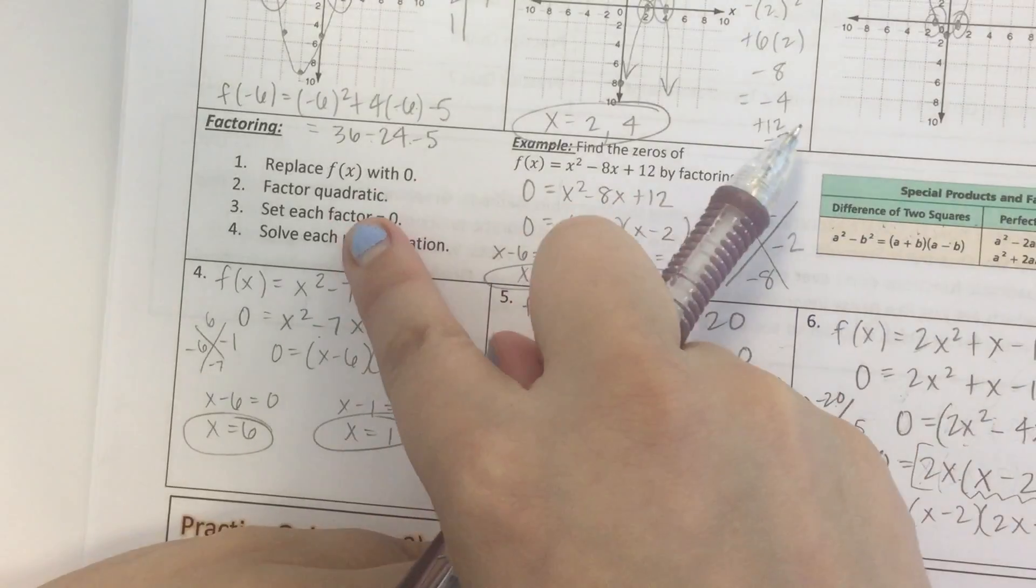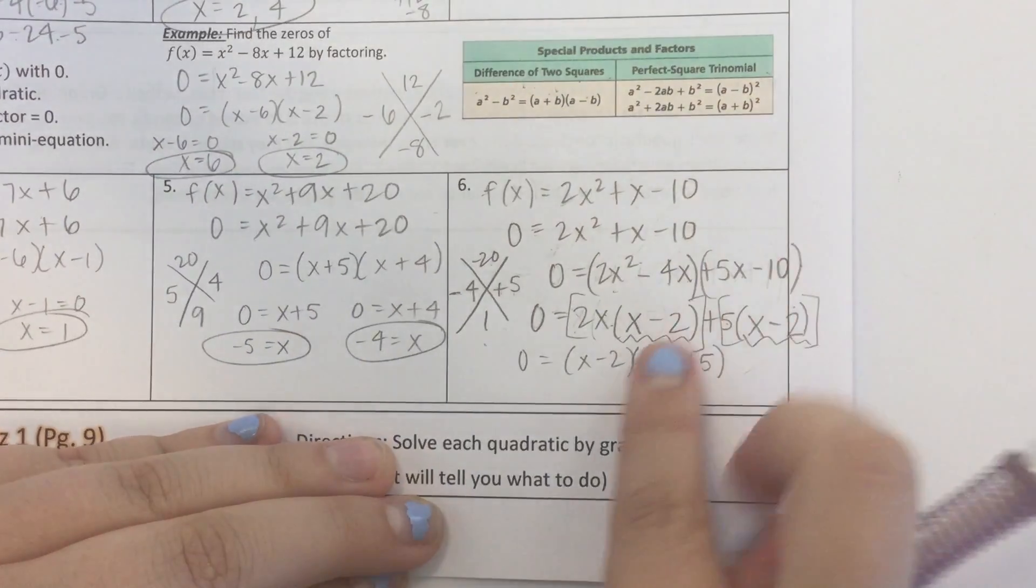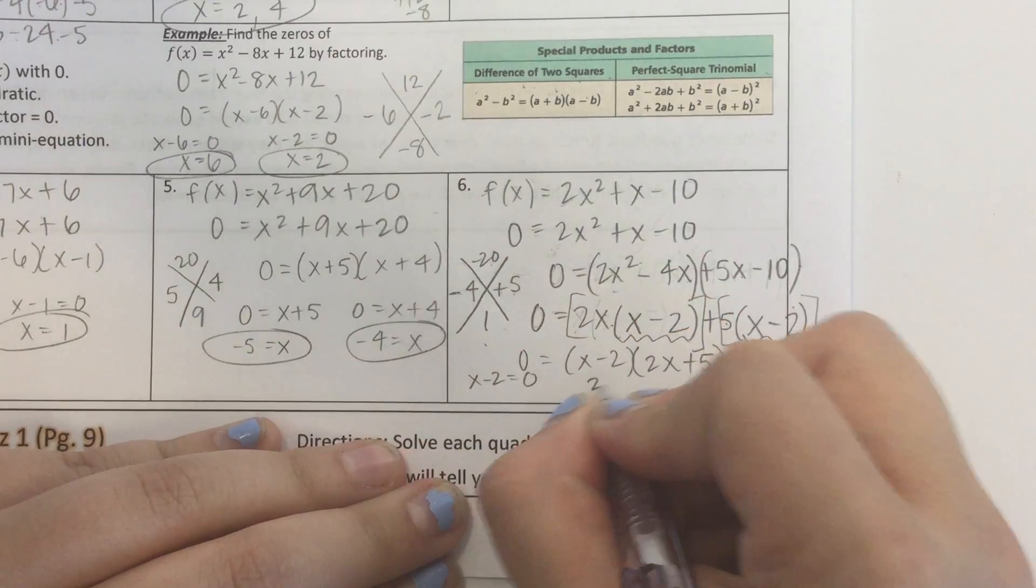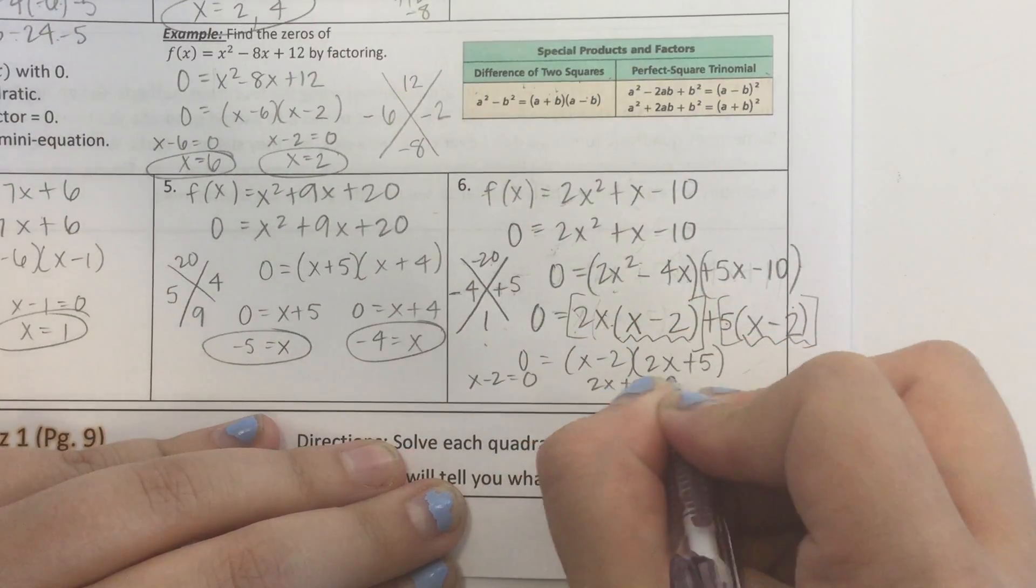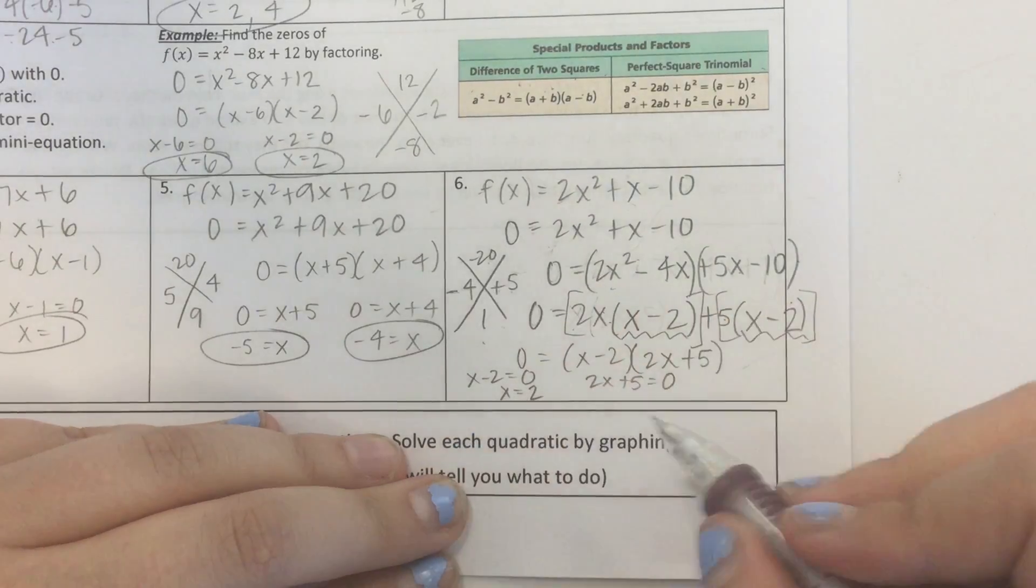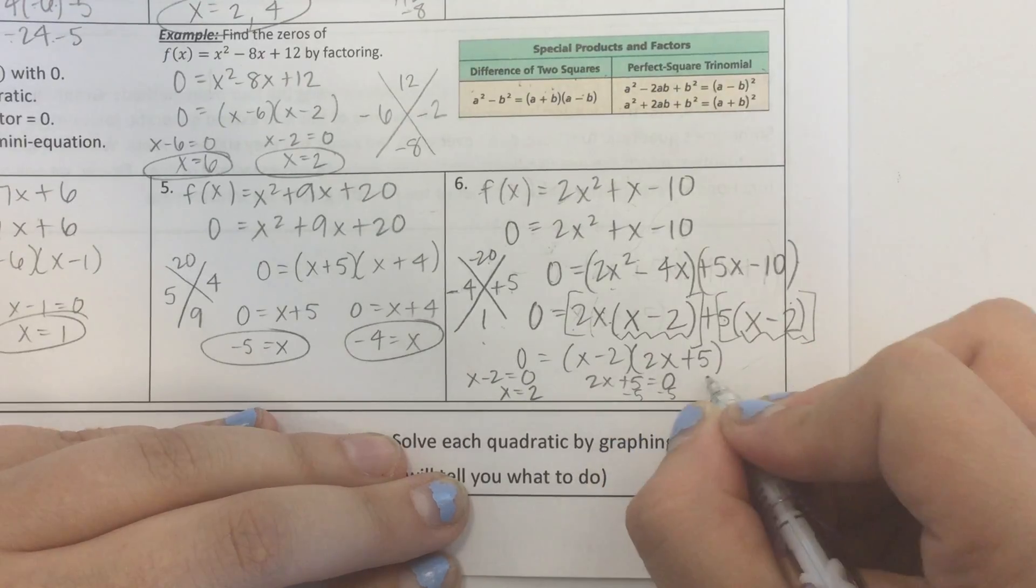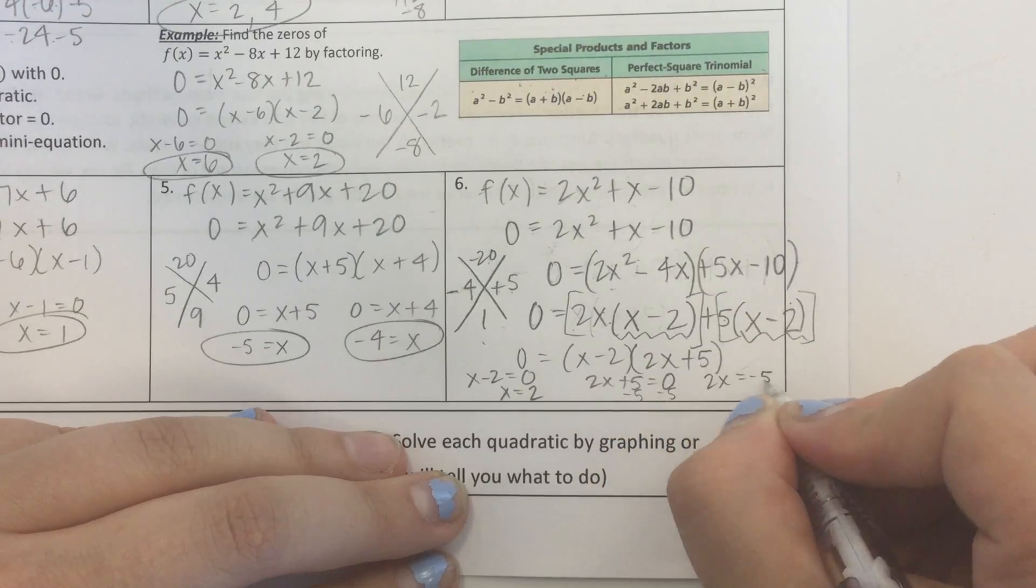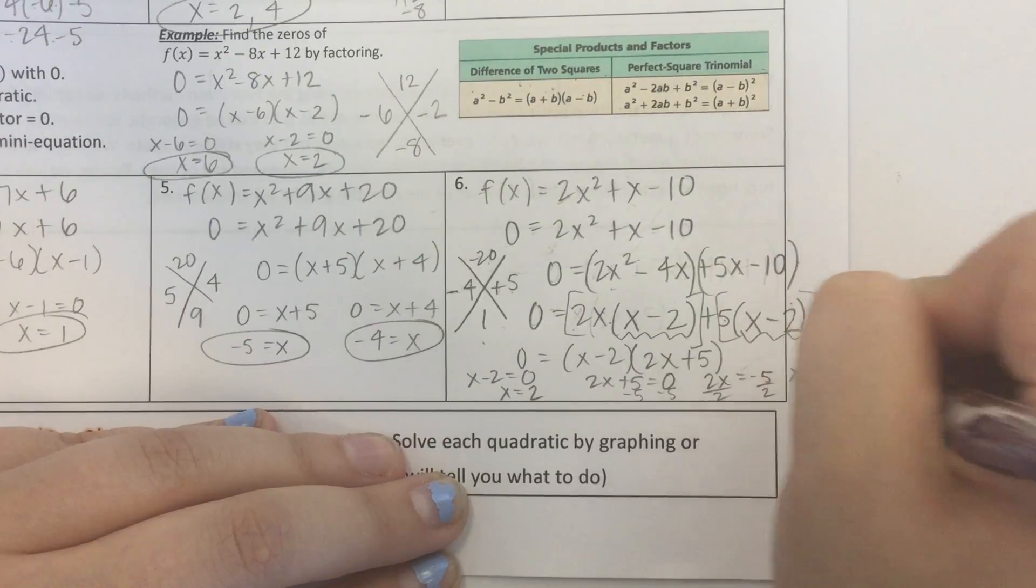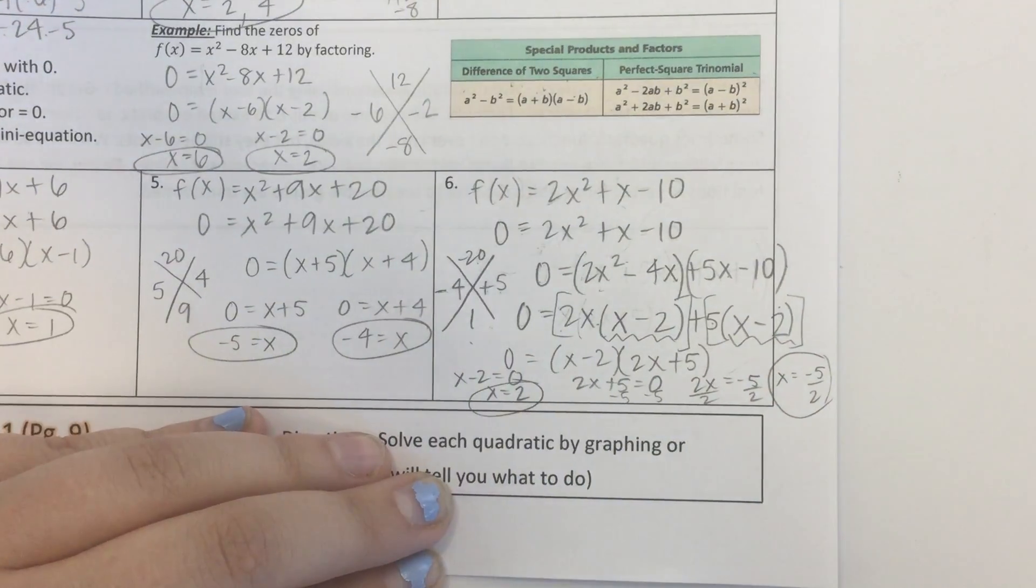But we're not completely done because we still have to follow our two steps that are left. So we're going to take each of these and set it equal to 0 and solve. Well, all I have to do here is add 2 and I get x equals 2. This one, I have to subtract 5. I get 2x equals negative 5. Divide by 2. x equals negative 5 over 2. And those are our two solutions. And we're done.